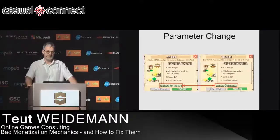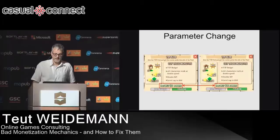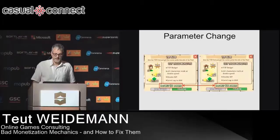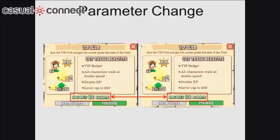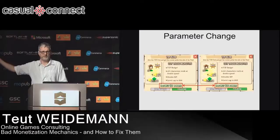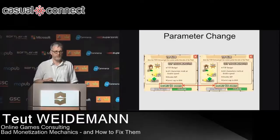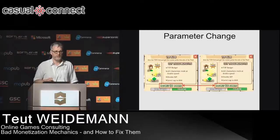Something called parameter change means a game changes any parameter depending on your behavior. You can see from the screenshot which company did this in the extreme — Zynga, and you can see where Zynga is now. They offered a VIP club offer, identical in content, to one user for $15 and to another for $25. The difference? The left user was non-paying, the right was a paying user. Once you've paid, it's easier to convince you to pay more, so they charged paying users more than non-paying users — and they got away with it.